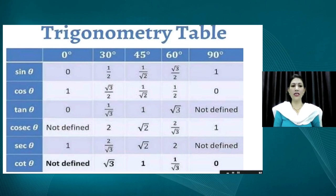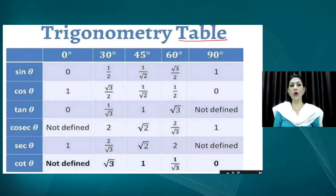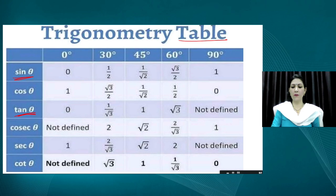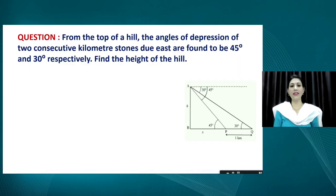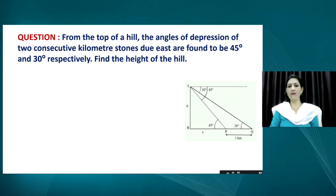One more important thing is the trigonometric table. This table will be helpful to our viewers to look up values such as sin 30°, tan 45°, and so on. We are using this table from our previous chapter on trigonometry. So let us start with the first question.